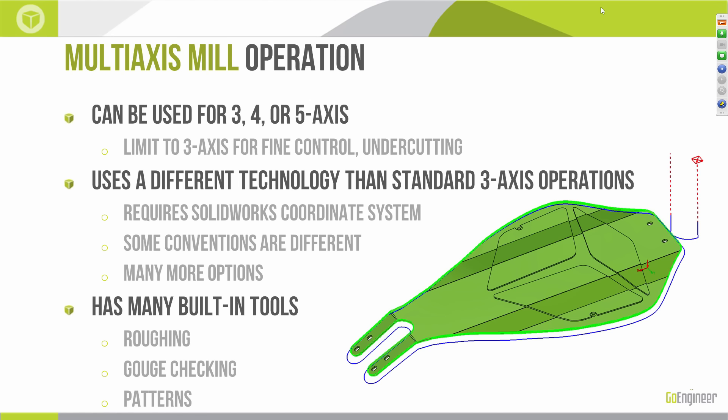Speaking of it having more options, you'll see it has many built-in tools in this one operation. In standard three-axis, we have one feature type — a multi-surface feature — and then maybe six, seven, or eight different operation types. With multi-axis mill, everything falls under one operation that has many options. Built into that one operation we can do roughing passes, gouge checking, patterns, and all sorts of other things.